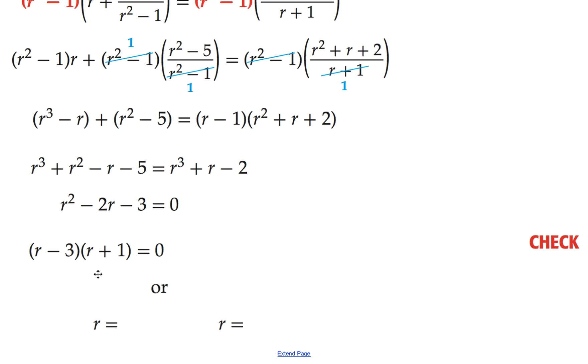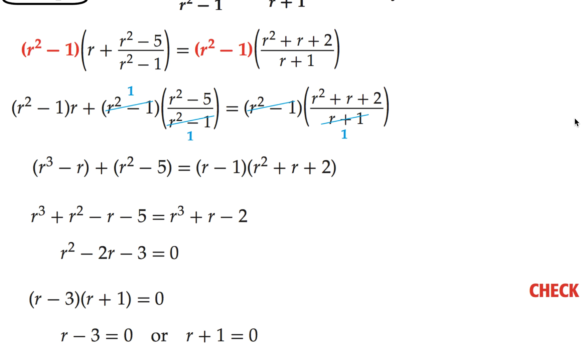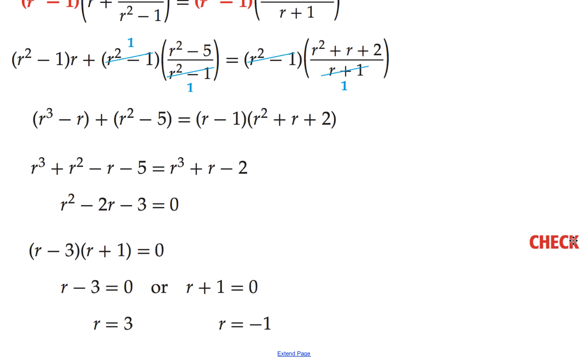And then set each factor equal to 0. r minus 3 equals 0. r plus 1 equals 0. And solve each one. So we get r equals 3 and r equals minus 1. Now go back up to your original equation. What values can we not let r be? r cannot be a negative 1 or it cannot be a positive 1. So let's look at our solutions. Did we get plus or minus 1? Yes, we did.